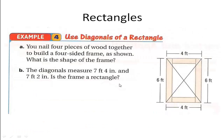Let's see an example using diagonals of a rectangle. You nail four pieces of wood together to build a four-sided frame. This side measures 4 feet, this side 4 feet, this side 6, and this side 6. So far, the only conclusion I can reach is that opposite sides are congruent. That's all I can say — I can't assume anything else.